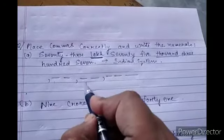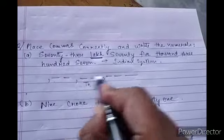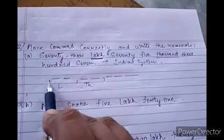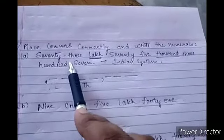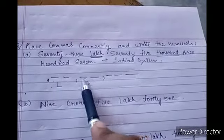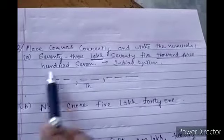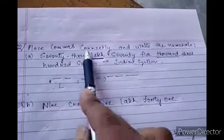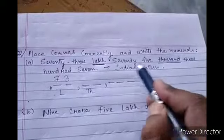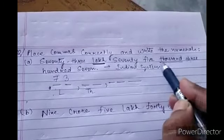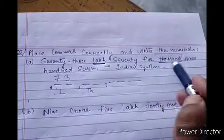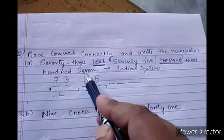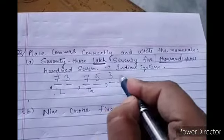In the Indian system we place commas like: ones, tens, hundreds, comma, thousands, ten thousands, comma, lakhs. So lakh place gets the lakh value and thousand place gets the thousand value. Seventy-three lakh goes in the lakh place, and seventy-five thousand — 75,000 — goes in the thousand place.